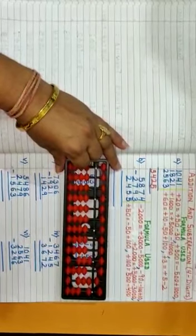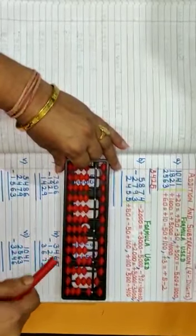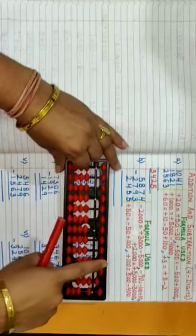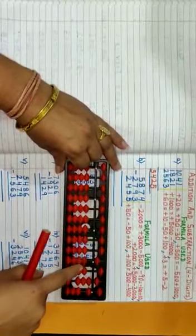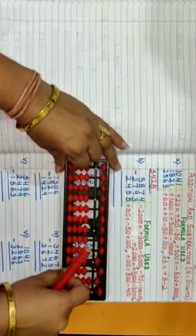Then 2455. 2000 is not possible, so plus 5000 minus 3000. Then 400 directly.